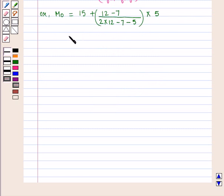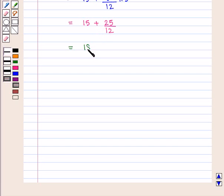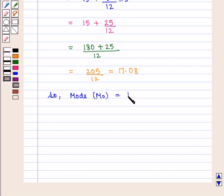Which is equal to 15 plus (12 minus 7, that is 5) upon (2 into 12, that is 24, minus 7 minus 5, which is minus 12) into 5. That is 15 plus 5 upon (24 minus 12, that is 12) into 5, which is equal to 15 plus (5 into 5, that is 25) upon 12. On taking the LCM, we get (180 plus 25) upon 12, which is equal to 205 upon 12, that is 17.08. So mode M0 is 17.08.